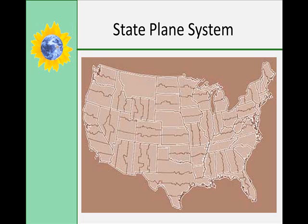Idaho's east zone, plane system 1101, includes the counties of Bannock, Bear Lake, Bingham, Bonneville, Caribou, Clark, Franklin, Fremont, Jefferson, Madison, Oneida, Power, and Teton. Idaho's central zone, 1102, includes Blaine, Butte, Camas, Cassia, Custer, Gooding, Jerome, Lemhi, Lincoln, Minidoka, and Twin Falls. And finally, the west zone includes Ada, Adams, Benewah, Boise, Bonner, Boundary, Canyon, Clearwater, Elmore, Gem, Idaho, Kootenai, Latah, Lewis, Nez Perce, Owyhee, Payette, Shoshone, Valley, and Washington.